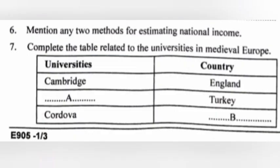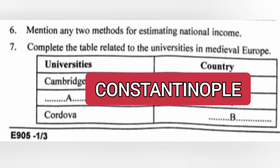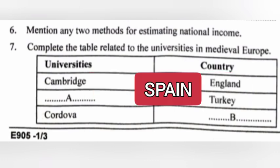Question 7: Complete the table related to the universities in medieval Europe. Answer: a) Constantinople, b) Spain.